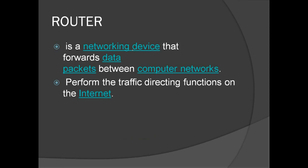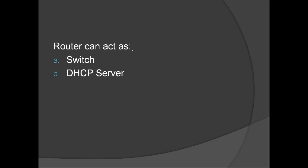We have the router — a networking device that forwards data packets between computer networks and performs traffic directing functions on the internet. A router can act as a switch, providing connectivity as a switch. It can also act as a DHCP server, serving as the source of IP addresses on the network. Most routers now also have a wireless access point feature.